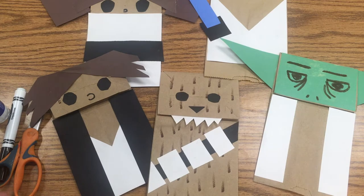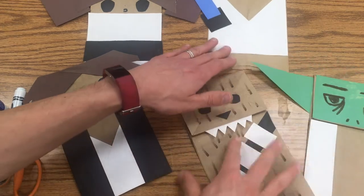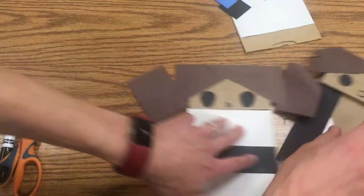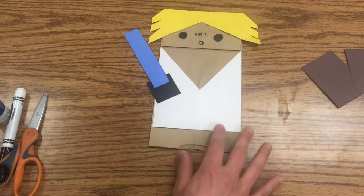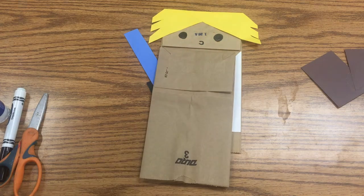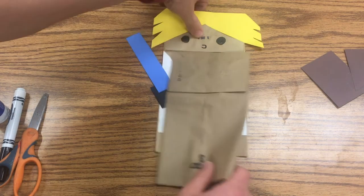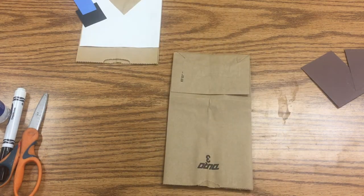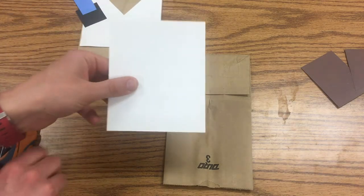Hey everybody, we're going to make Star Wars puppets and we're going to start off by making Luke Skywalker. All you have to do is have a paper bag. You start off with a white rectangle that you're going to cut in half diagonally.